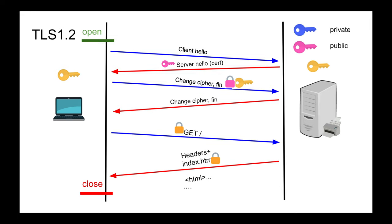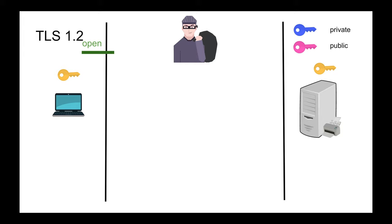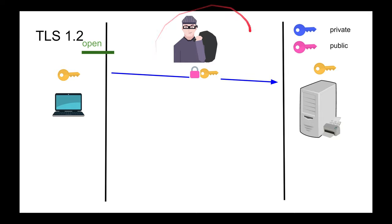Here's the problem with TLS 1.2. Suppose someone is sniffing — performing a man-in-the-middle attack, poisoning ARP so all MAC frames flow through them, recording everything. They record the encrypted symmetric key that traveled in the air. They can't decrypt it yet because they don't have the server's private key.